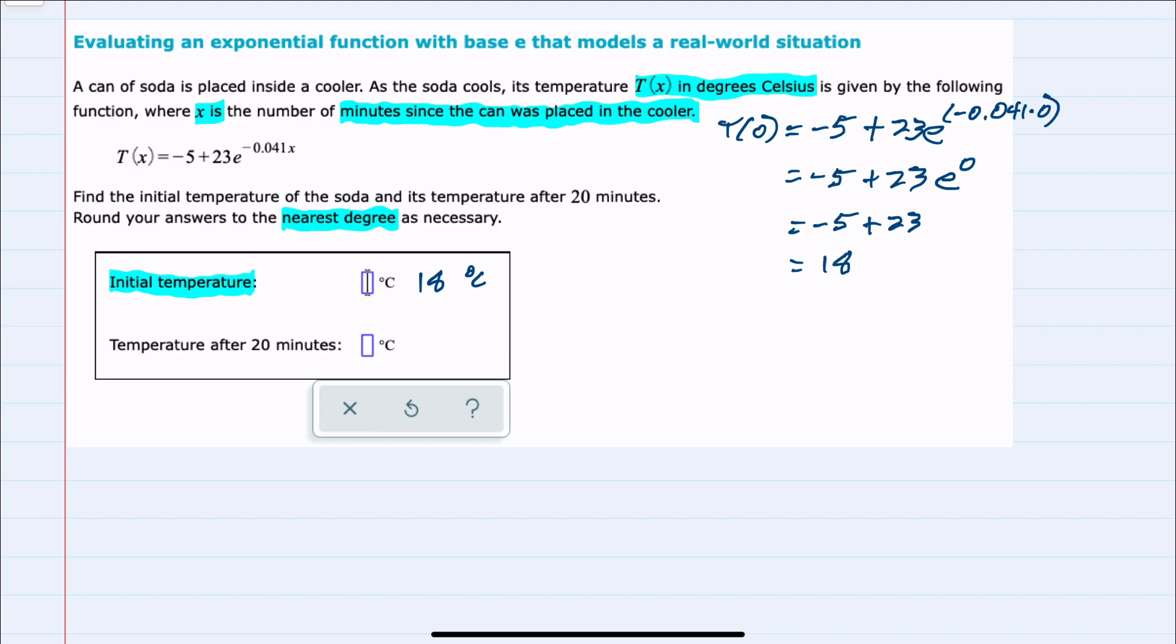For the second part of the question, we're asked for the temperature after 20 minutes, and here our x would be 20. Replacing x with 20 means that exponent will be negative 0.041 times 20.